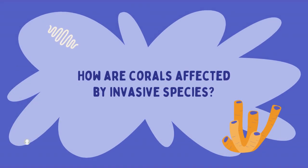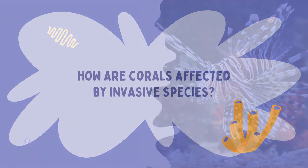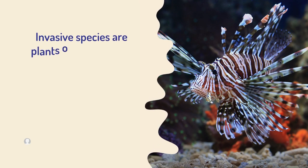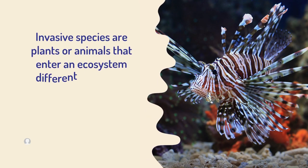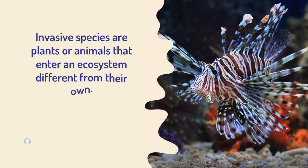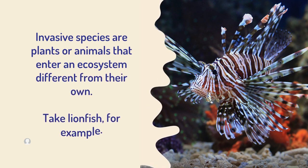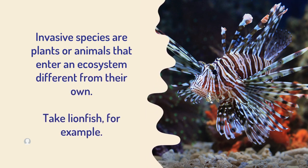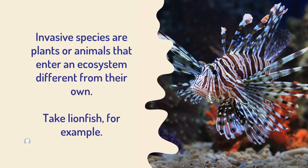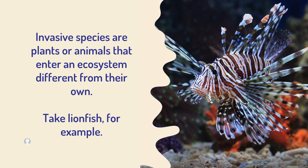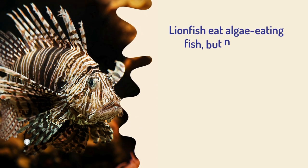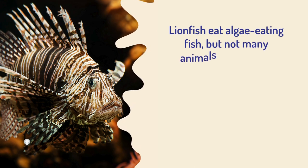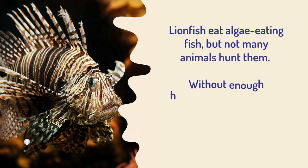How are the corals affected by invasive species? Invasive species are plants or animals that enter an ecosystem different from their own. Take lionfish for an example. Lionfish eat algae-eating fish, but not many animals hunt them.